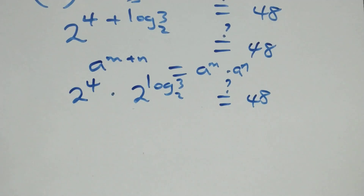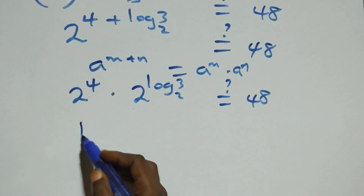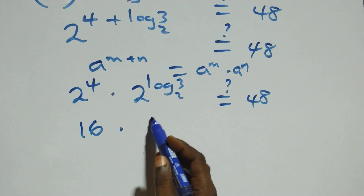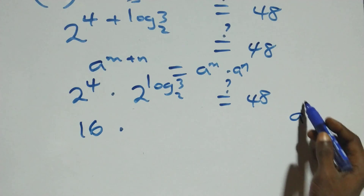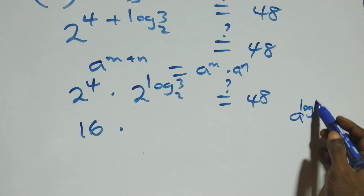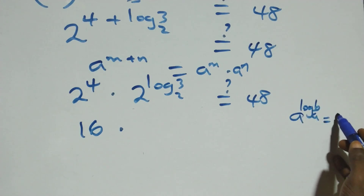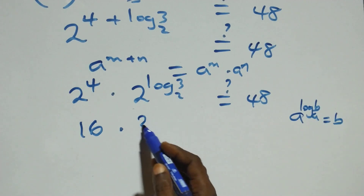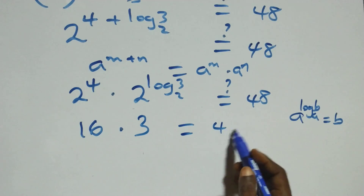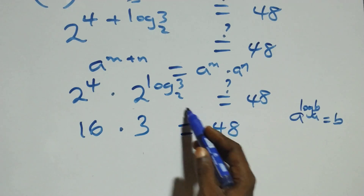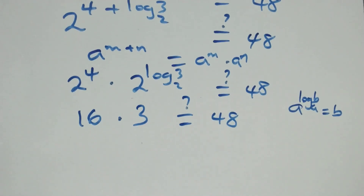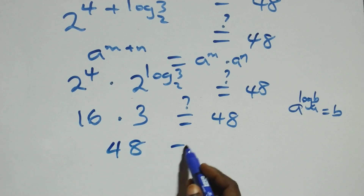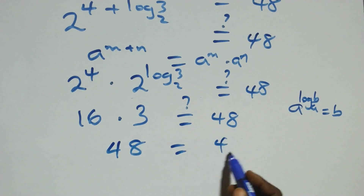In 2 raised to power 4, 2 multiplies itself 4 times, that's 16. This follows the rule: a raised to power log b to base a equals b. So 2 raised to power log 3 base 2 is the same thing as 3. That gives us 16 times 3 equals 48, which equals 48 on this side.